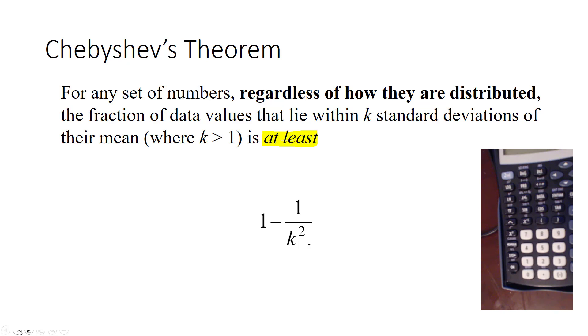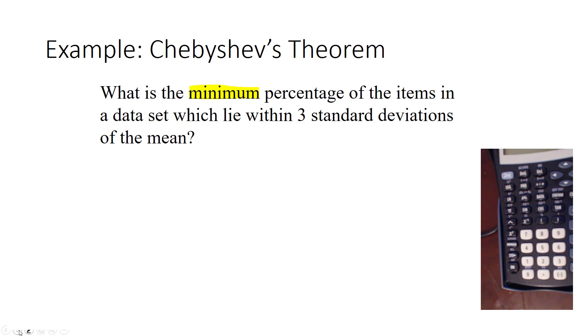It says that at least this amount. So it's giving us a minimum amount of data that has this characteristic of being within a certain number of standard deviations of the mean. So to figure out what percentage lie within 3 standard deviations of the mean, we write down our formula, 1 minus 1 over k squared. And we identify that k, since it's the number of standard deviations, would be 3 in this question. So we're going to subtract 1 minus 1 over 3 squared.